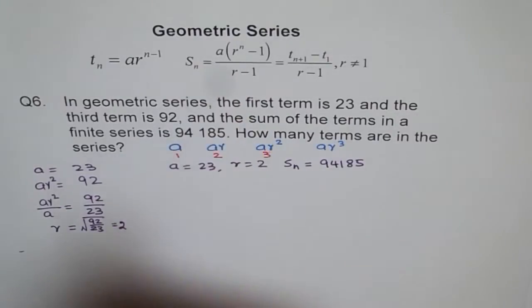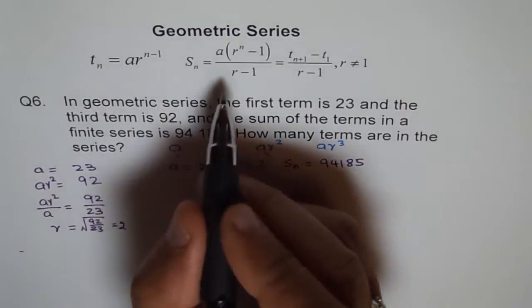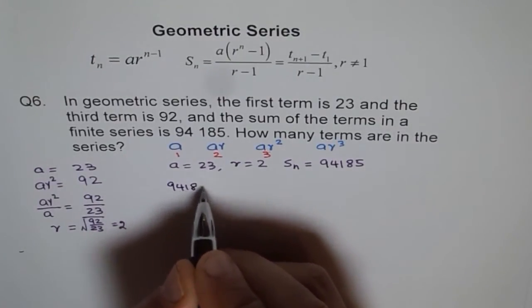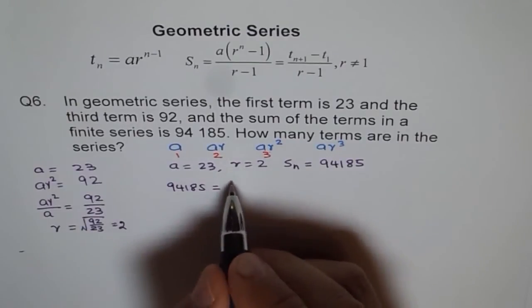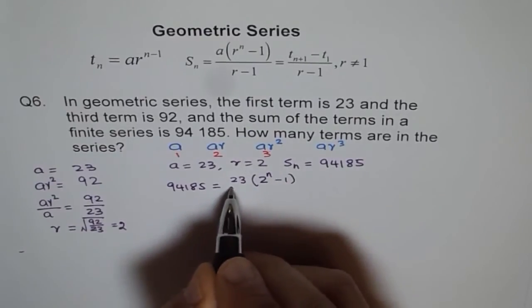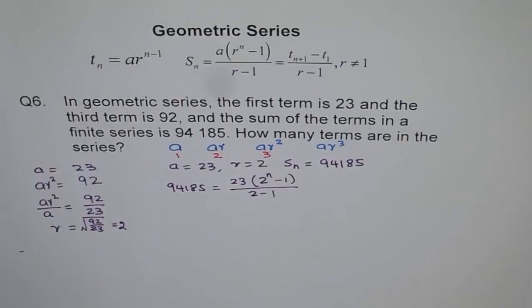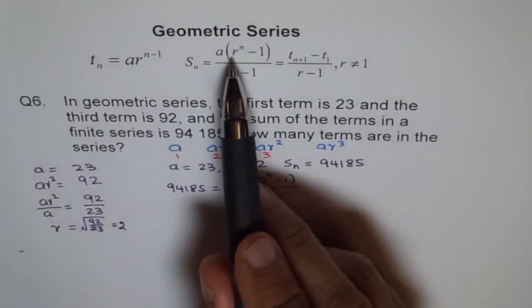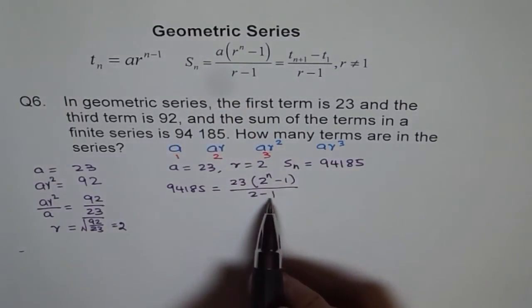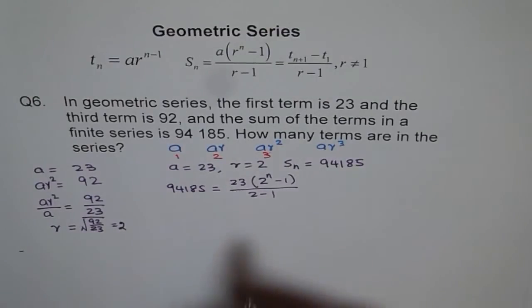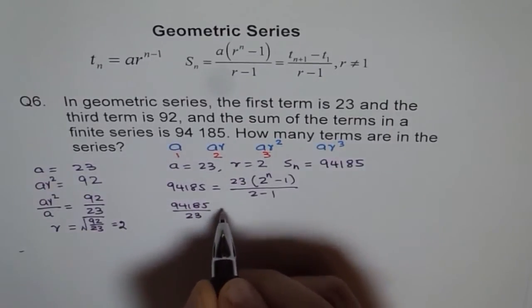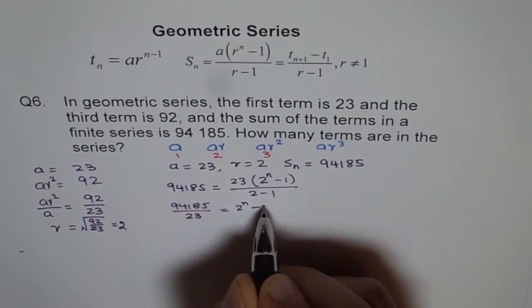We will use the sum formula Sn equals a times (r^n minus 1) divided by (r minus 1). Plugging in, we get 94,185 equals 23 times (2^n minus 1) divided by (2 minus 1). Dividing both sides by 23, we get 94,185 divided by 23 equals 2^n minus 1.